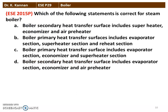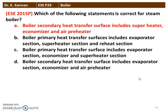Next question from the 2015 question paper: which of the following statements is correct for a steam boiler? Options: boiler secondary heat transfer surface includes superheater, economizer, and air preheater; boiler primary heat transfer surface includes evaporator section, superheater section, and reheat section; others. The correct option is that the boiler secondary heat transfer surface includes superheater, economizer, and air preheater. The boiler primary heat transfer surfaces are the evaporator and the reheater.